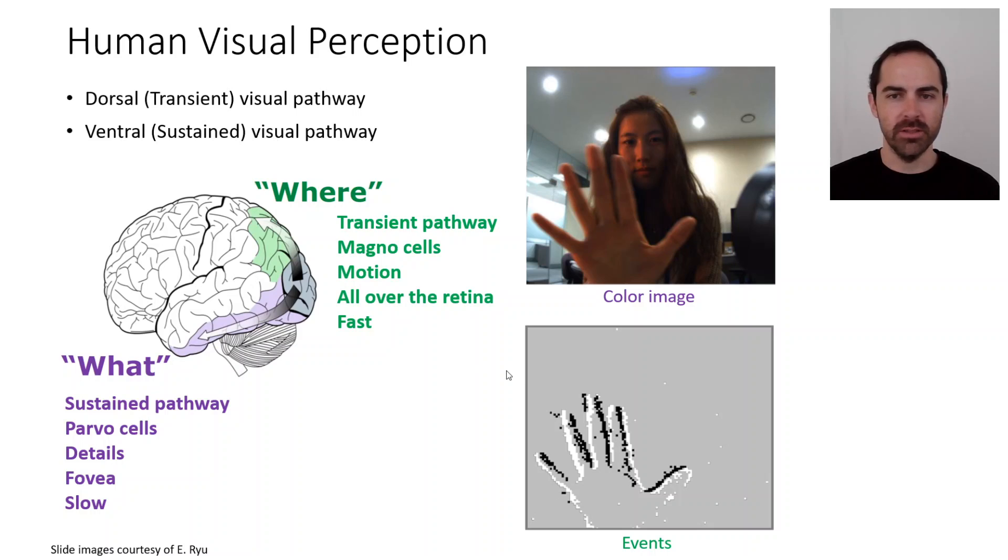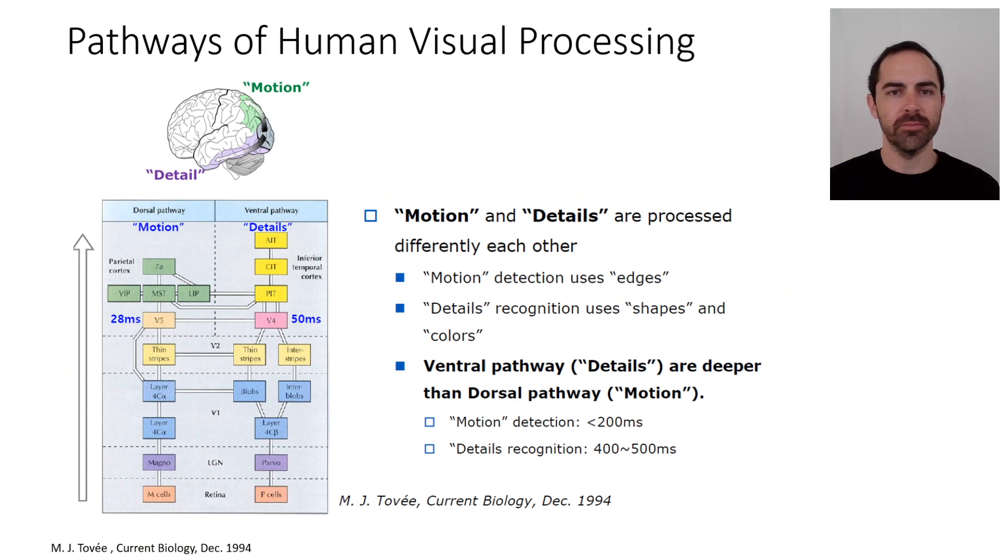Again, this is an oversimplified explanation of how the very complex human visual system works. This is the two pathways, how the processing works from the retina all the way to different parts of the brain. It passes through parvo or magno cells and the V1 area, the V2 area, and one captures the details and the other one captures the motion.